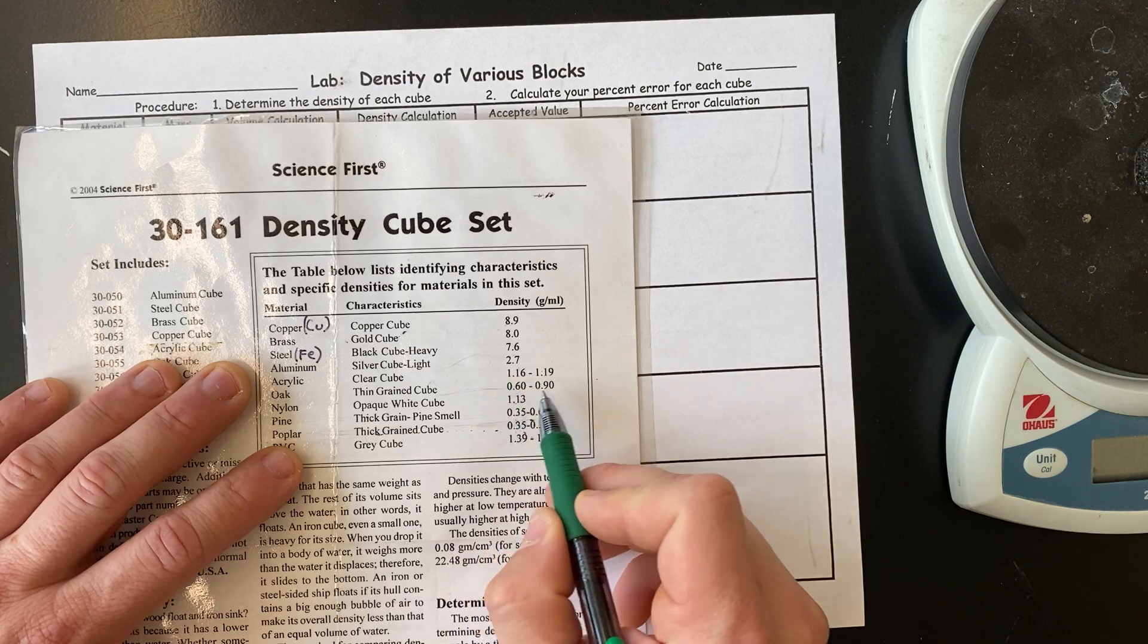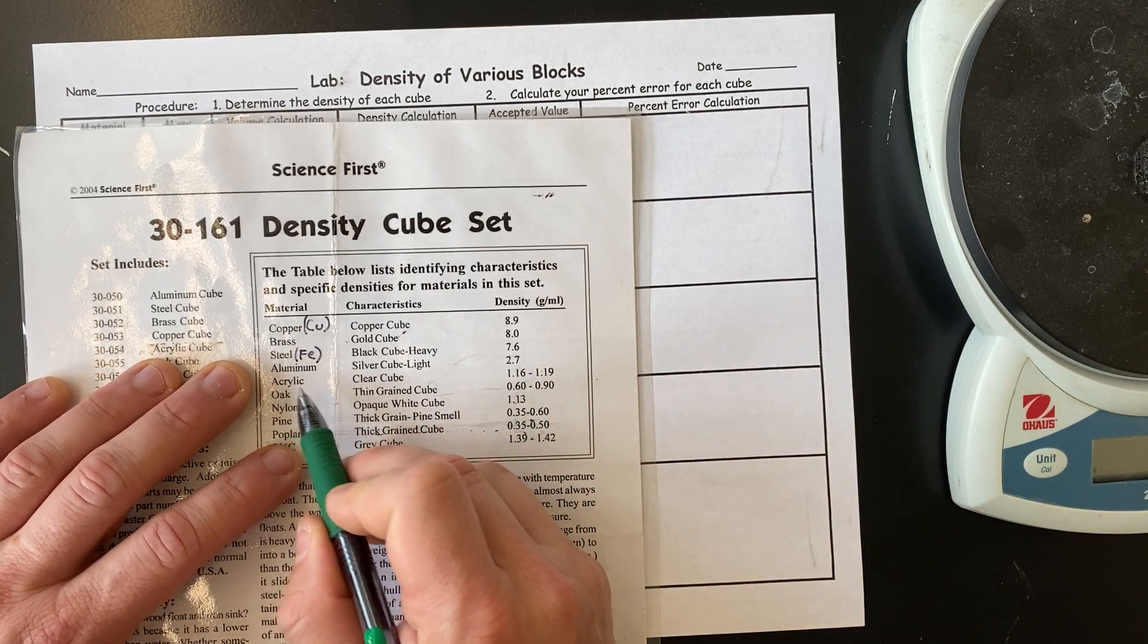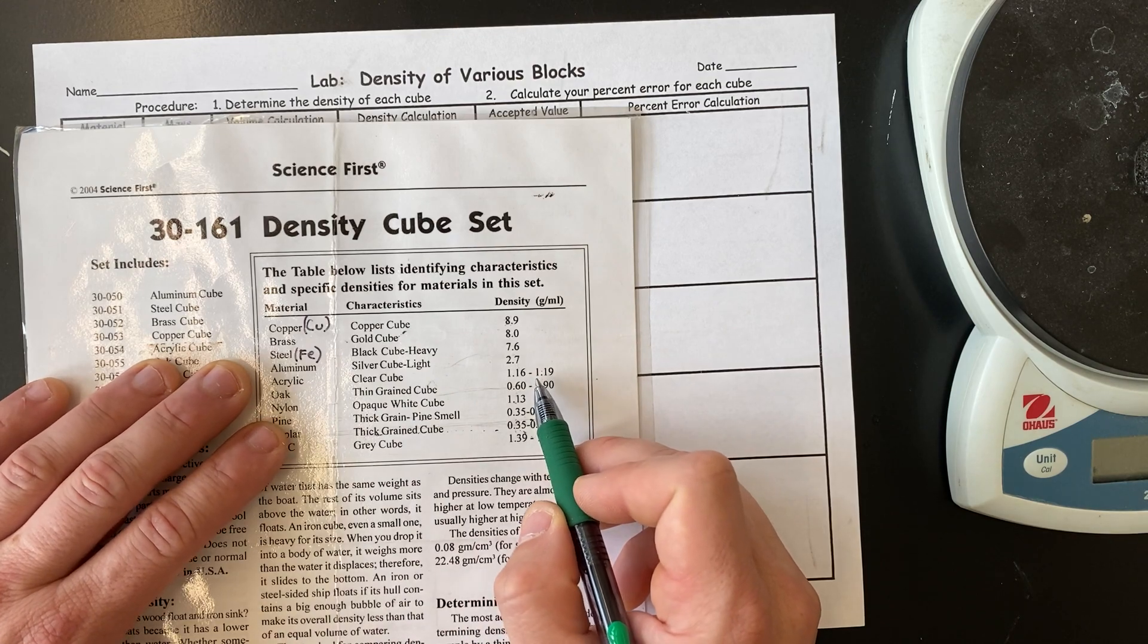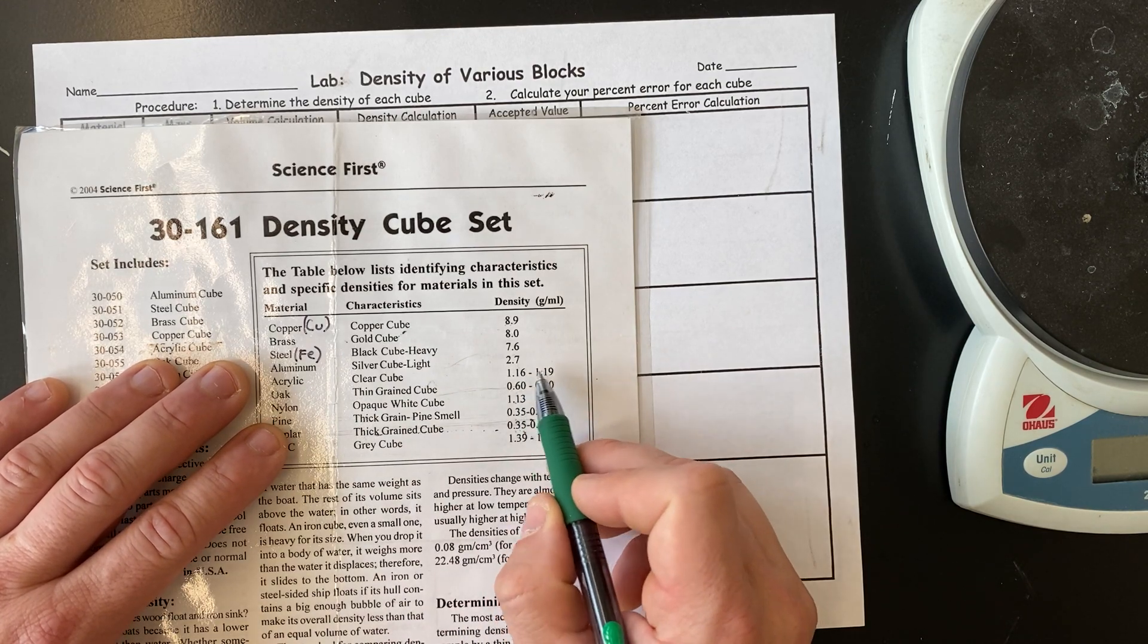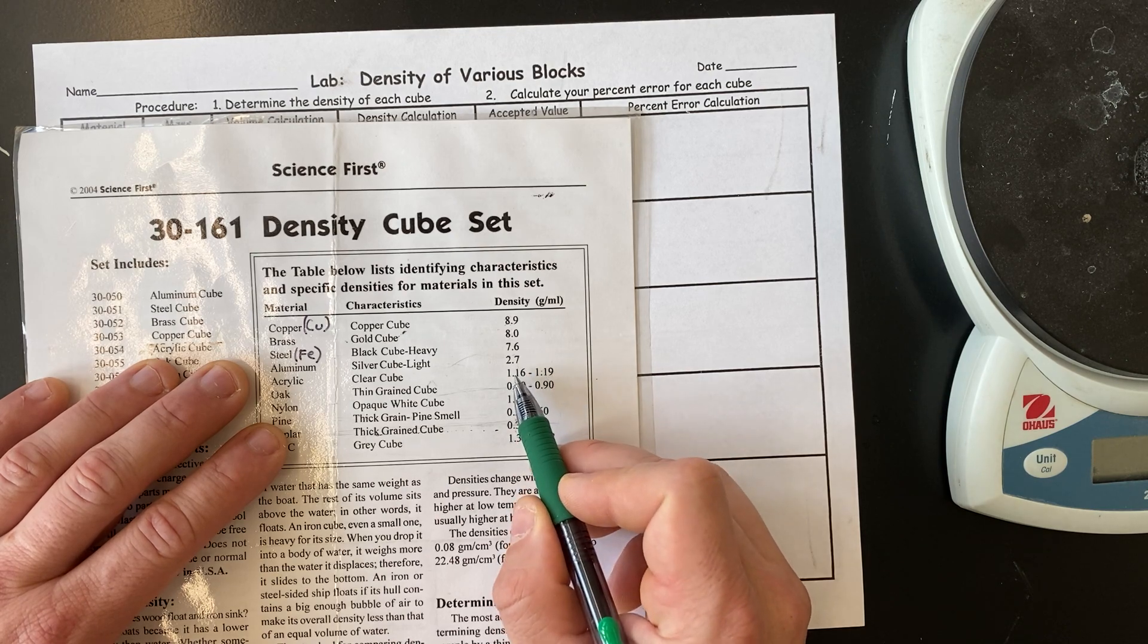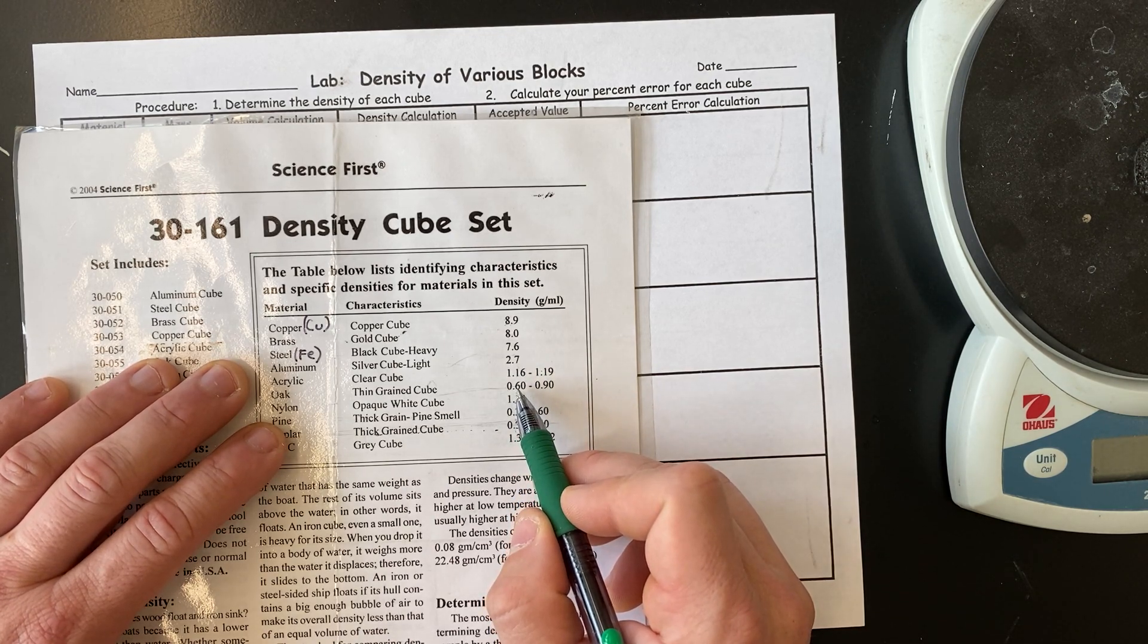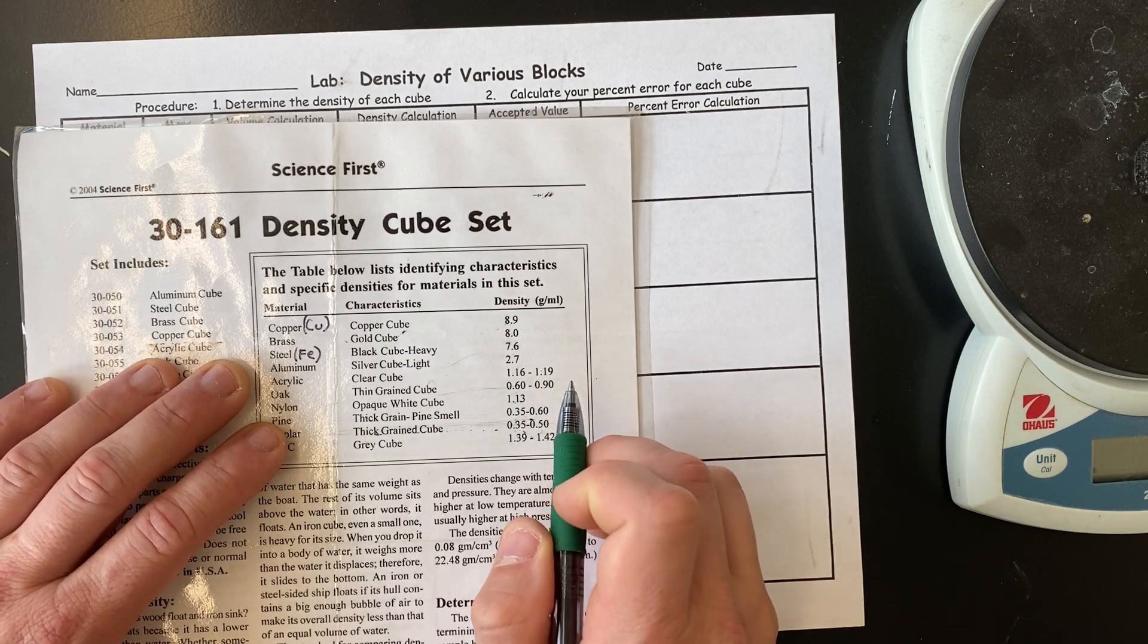Now, if you look at some of these ones down here, they have ranges. And the reason acrylic has a range, and the reason oak has a range, is because acrylic is man-made, and so the densities can vary depending on how much of each ingredient they mix into it. And oak is a tree, it's part of a tree.